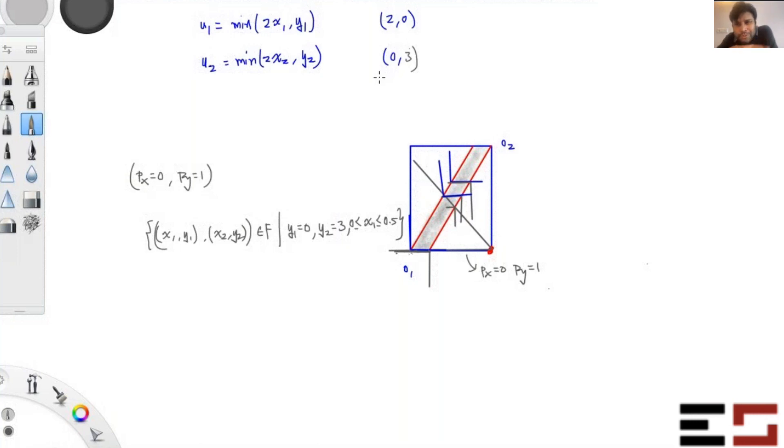Don't memorize solutions, understand how to solve problems. And the one that I just told you, if I change the utility functions, let's say u_1 is something else and u_2 is something else. Right now u_1 is min(2x, y) and u_2 is min(x, 2y), then things will be very different. So don't generalize these things. Try and understand first and then apply them.